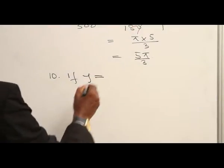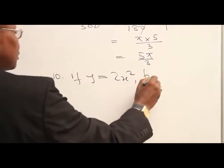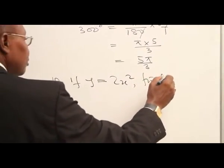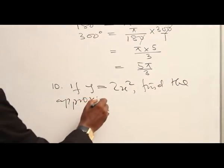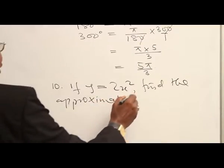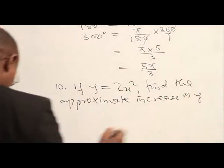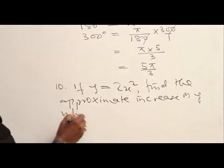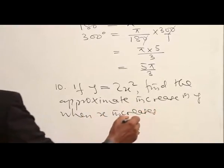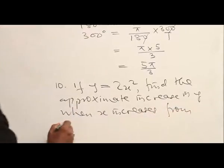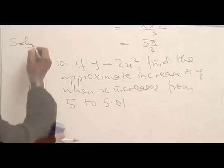If Y equals 2S squared, find the approximate increase in Y when S increases from 5 to 5.01. Our solution: